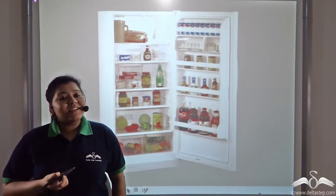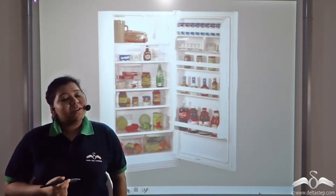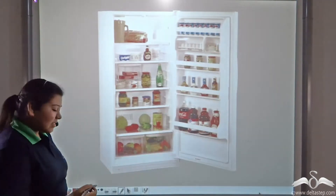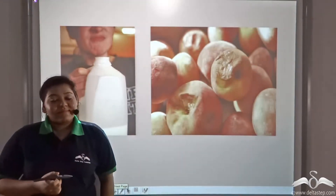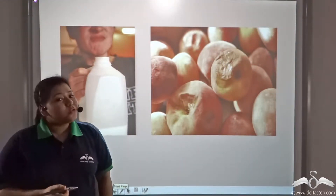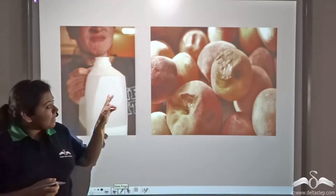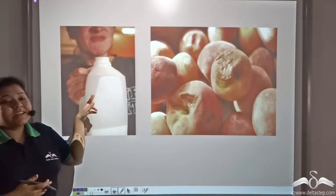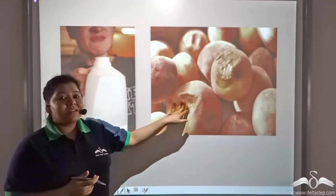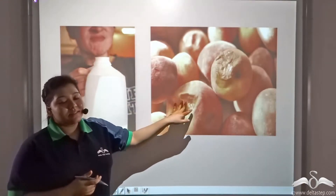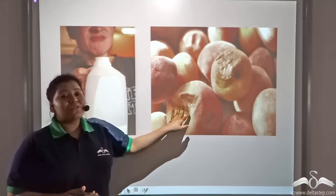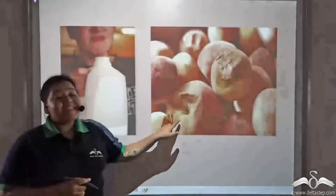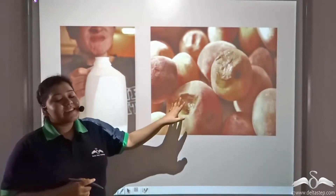Why do we keep food in the refrigerator? What would happen if we do not keep it in the fridge? Definitely food would get spoiled — milk, if you keep it for a long time outside, gets rancid, and fruits like apples and bananas get rotten. All of these effects are because of the bacterial action on food. These are the external effects of bacteria.